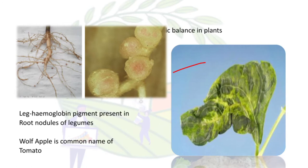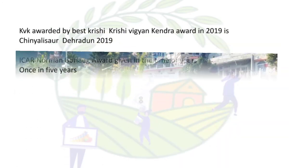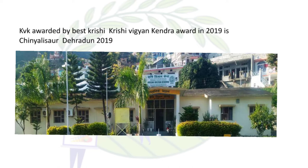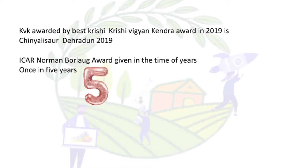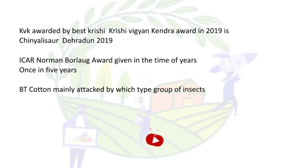The common name of tomato belongs to the Solanaceae family. The KVK best Krishi Vigyan Kendra award in 2019 was given to Dehra Dun. This award is given once in five years.